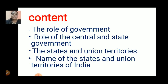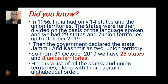In 1956, India had only 14 states and union territories. The states were further divided on the basis of the language spoken, and we had 29 states and 7 union territories up to October 2019. Then the government declared Jammu and Kashmir as 2 union territories. So from 31st October 2019, we have 28 states and 8 union territories.